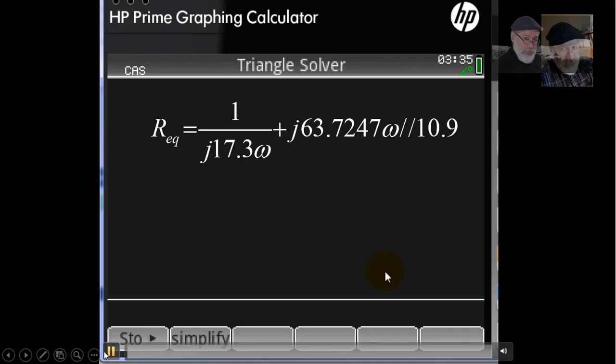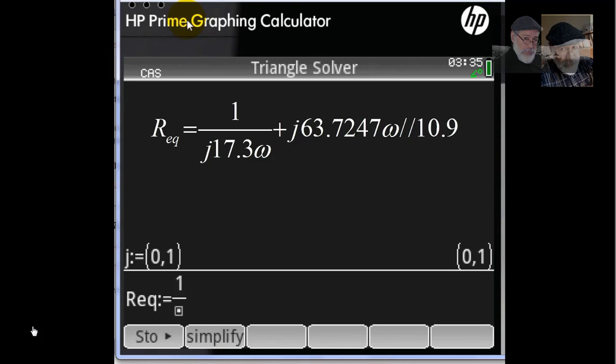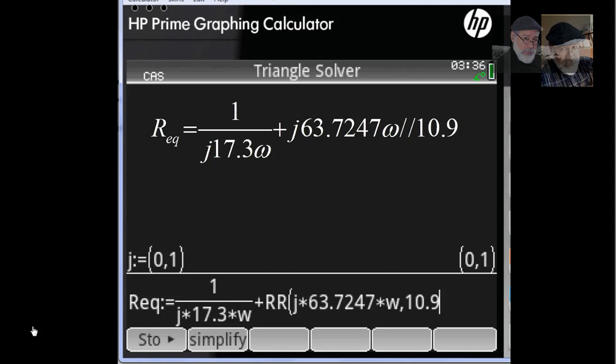We begin by defining in CAS mode the variable j. j is defined as 0,1, the imaginary unit. And now we define the variable Req. Req is, as said before, 1 divided by j multiplied by 17.3. We do not leave out the multiplication operands, right? Multiplied by omega. Of course, I have w. In series with a parallel of j, 63.7247 times omega and 10.9. That is the definition of Req. When I type enter, it writes that as a function of omega.